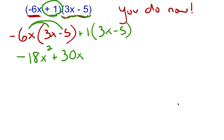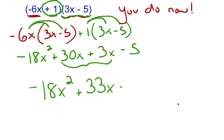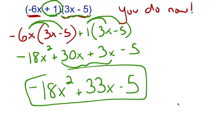Then we have 1 times 3x, which is plus 3x, and 1 times negative 5, which is minus 5. Combining like terms, we get negative 18x squared plus 33x minus 5. Our answer is in standard form, so we are done.